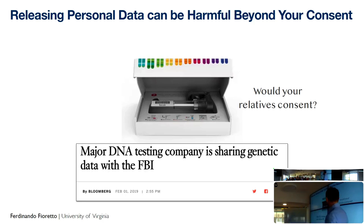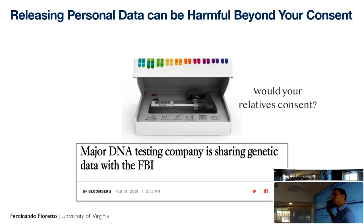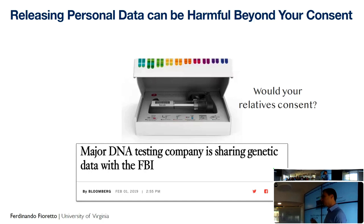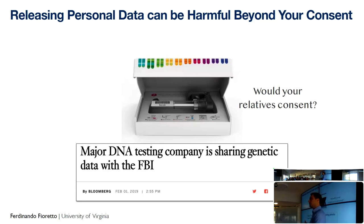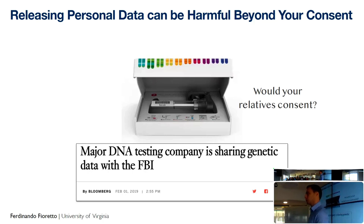Here is an example of a major DNA testing company that was sharing their data with federal agencies, specifically the FBI. What happened is that whenever a third party company has access to such data, the information disclosed was not limited to the genetic pool of that particular individual, but went way beyond, including the genetic pool of relatives. This was essentially a data breach that went beyond what one could consent to.